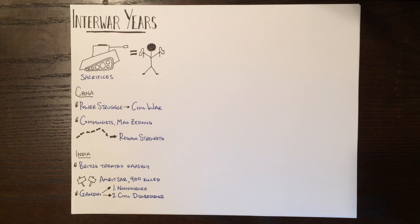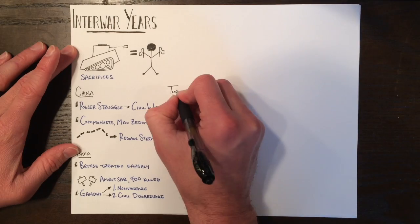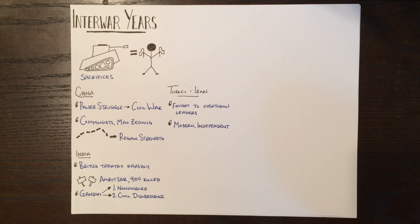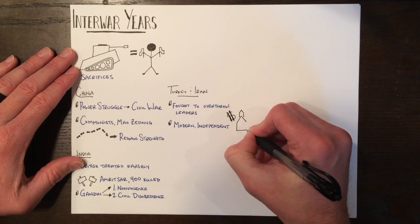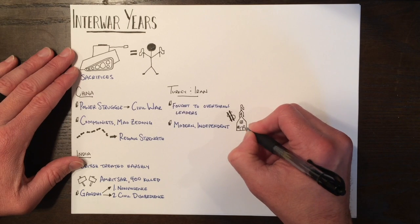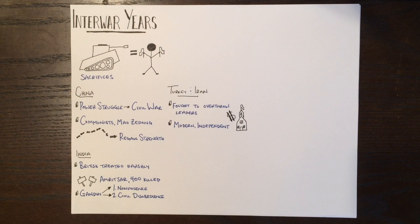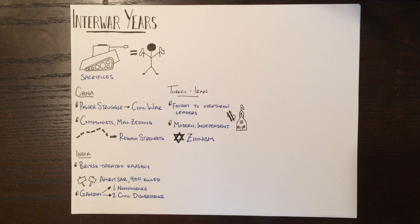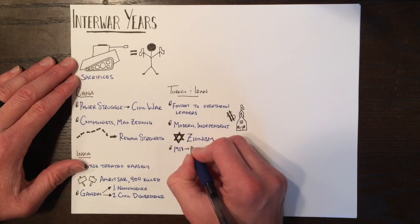The Middle East saw changes as well. In Turkey and Persia, both nations looked to overthrow their government to establish a more modern, independent nation. In order to do this, these new rulers looked to put in reforms to improve the economy and education. Zionism, a Jewish nationalist movement, emerged. In 1917, the British supported the Jewish homeland in Palestine with the Balfour Declaration.